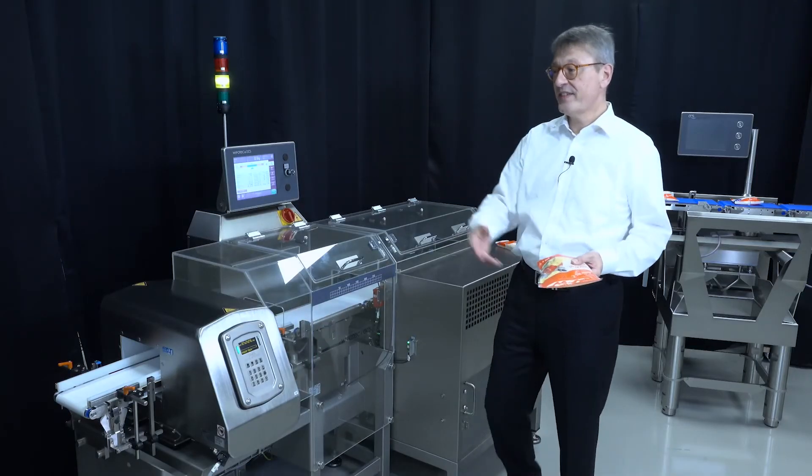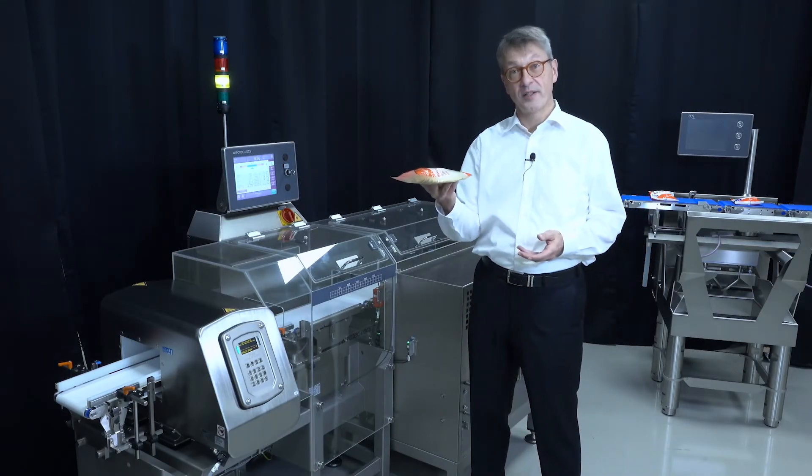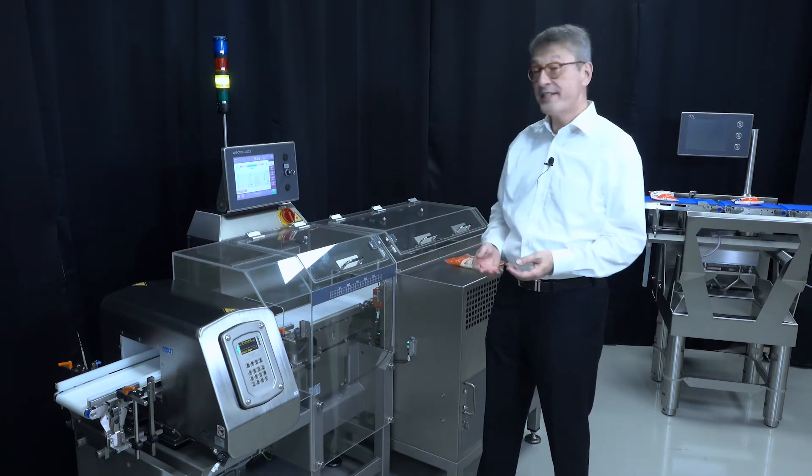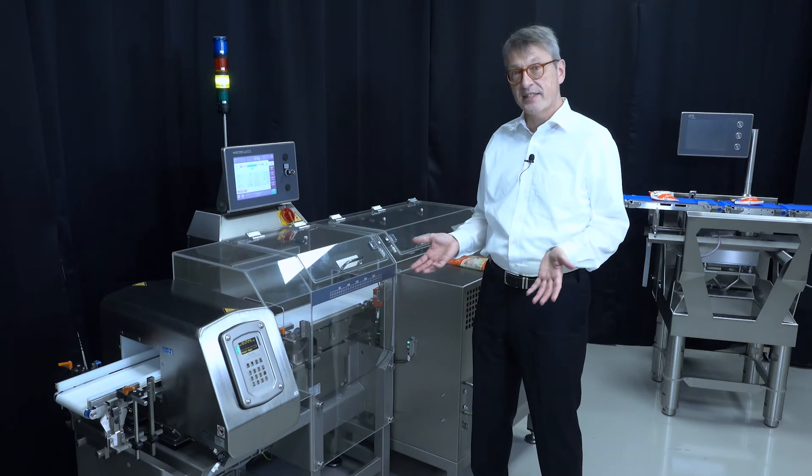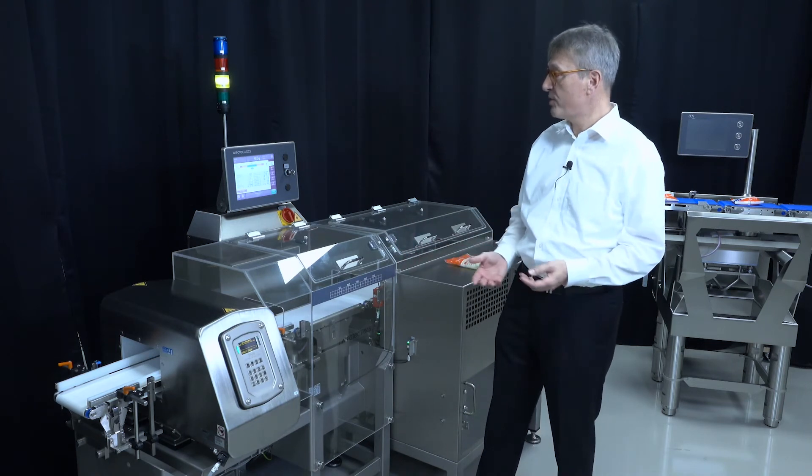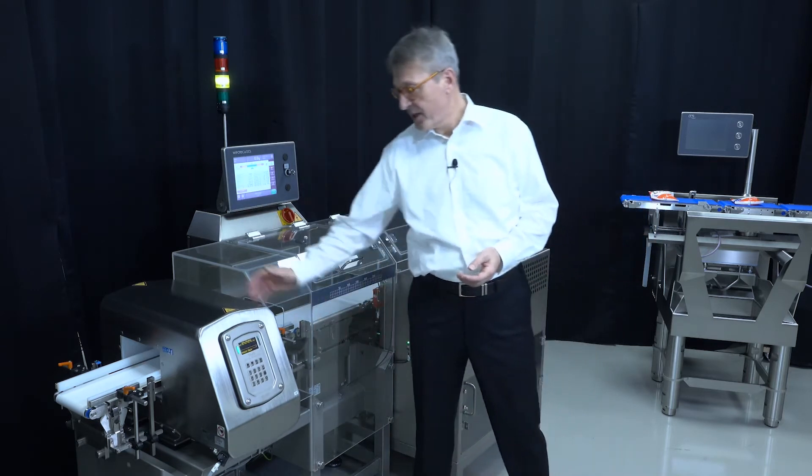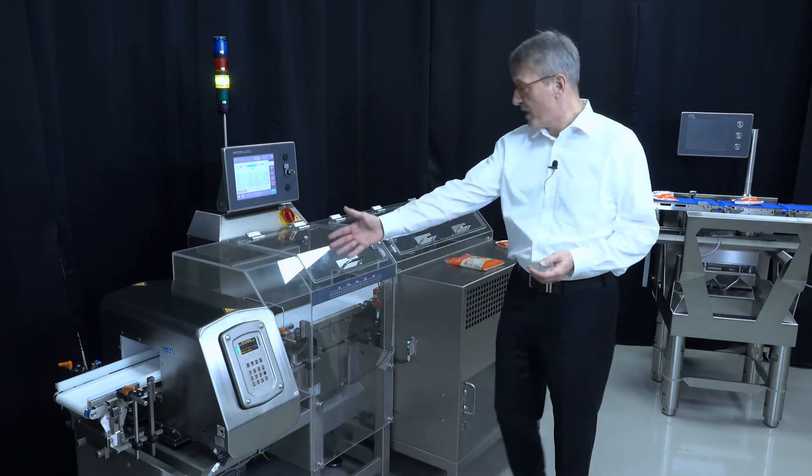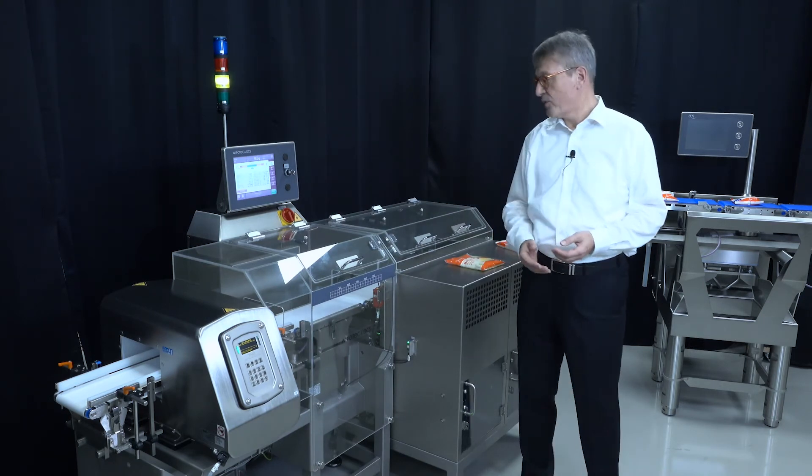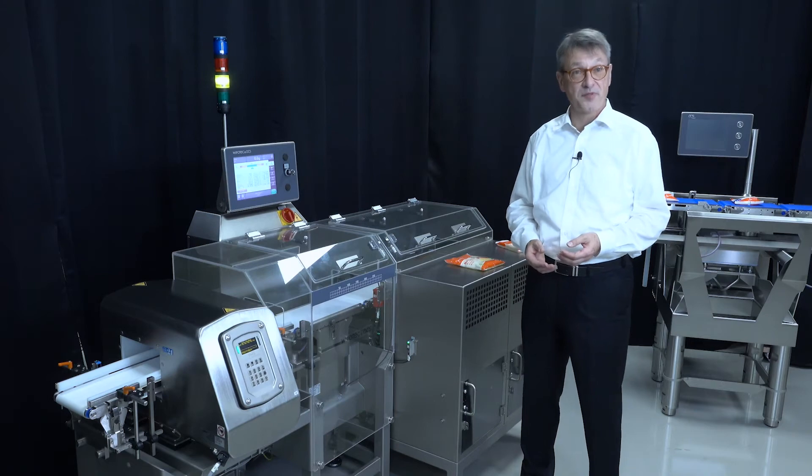Coming from the ECE VA showing shredded cheese in bags, we're now standing in front of an HCM VA. That's the next higher model when it comes to a higher throughput and you want maybe to include more options such like a metal detector or you would like to have a full housing to reflect what is requested by supermarket specification.